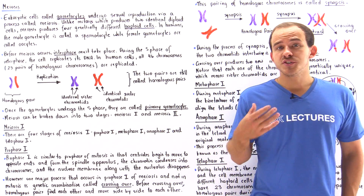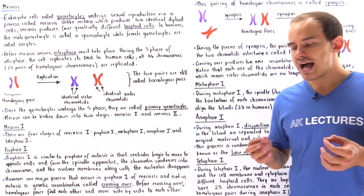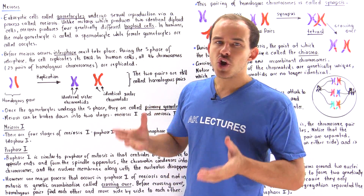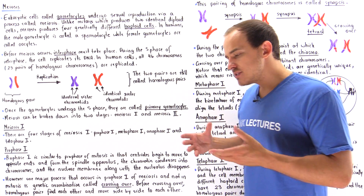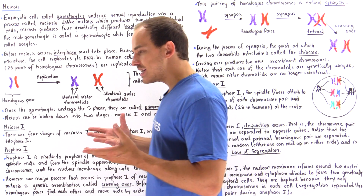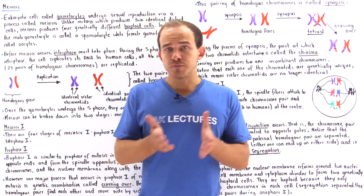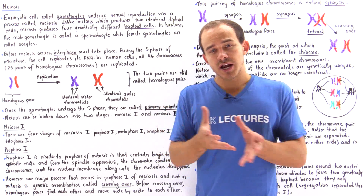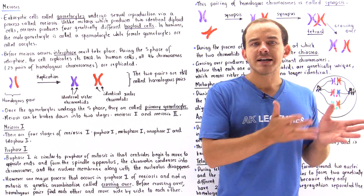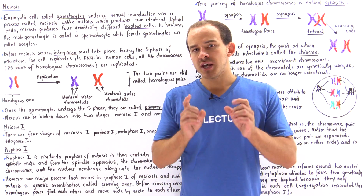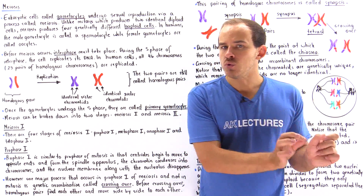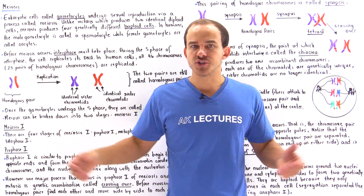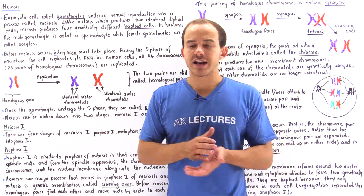In the next two lectures, we're going to begin our discussion on a type of sexual reproduction process that takes place in eukaryotic cells known as meiosis. When we discussed mitosis, we said that mitosis is a cell division process that somatic cells undergo. Those eukaryotic cells that divide via meiosis are known as gametocytes. So gametocytes divide via meiosis and somatic cells divide via mitosis.